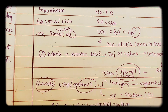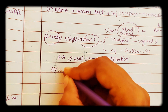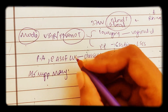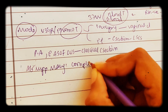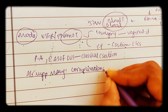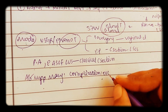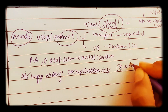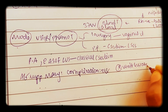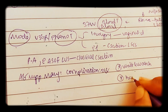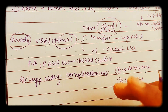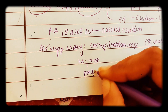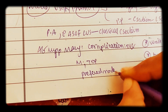Coming to management of abruptio placenta — the major complication is DIC. The more the time interval between onset of abruption and delivery, the greater the chances of DIC. So we should never wait and watch in this case, and never give tocolytics. Management is termination of pregnancy; the preferred mode of delivery is vaginal.